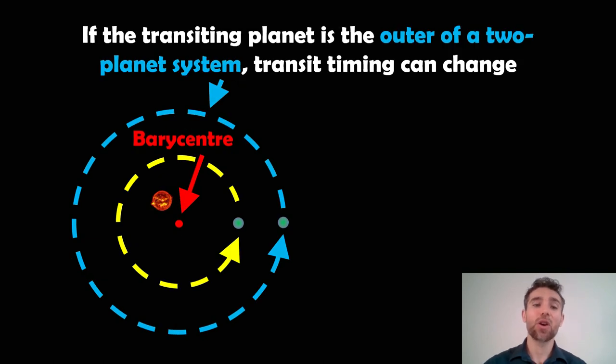So in this scenario, we've got a star. We've then got two planets. And if the transiting planet is the outer of the two-planet system, then we can observe a change in the transit timing. So why does that occur?